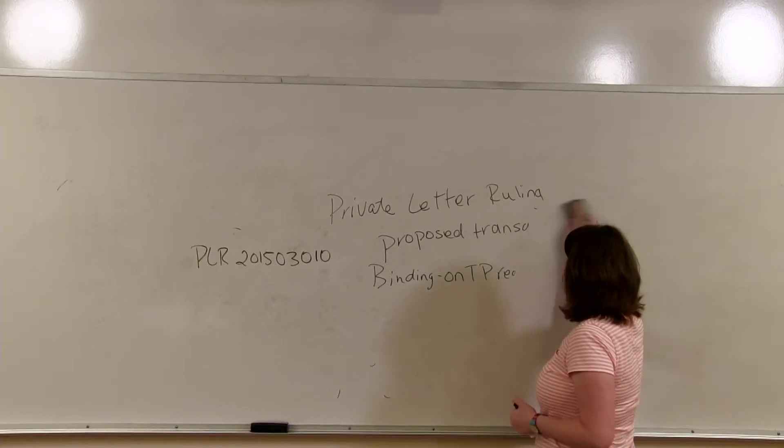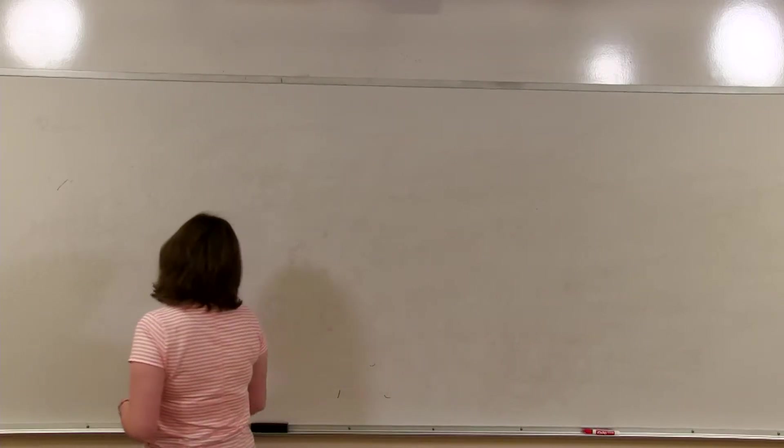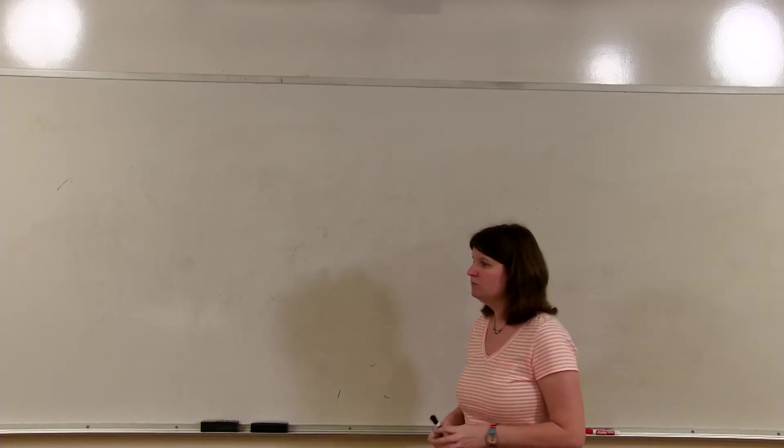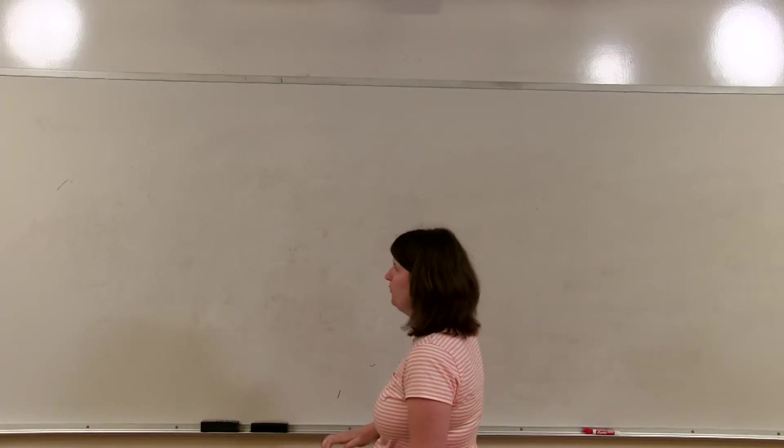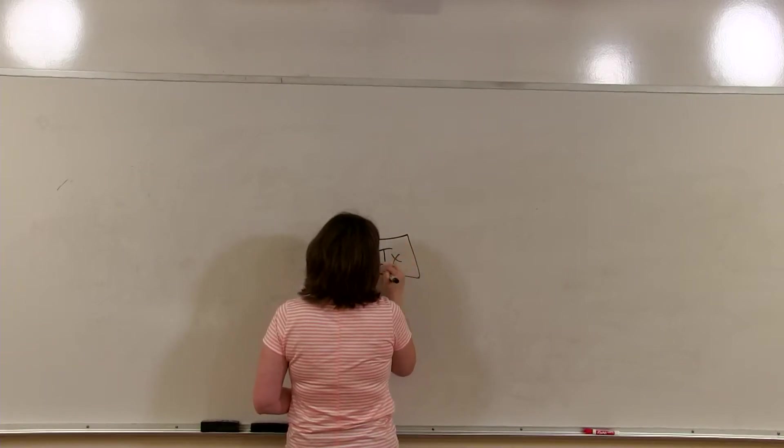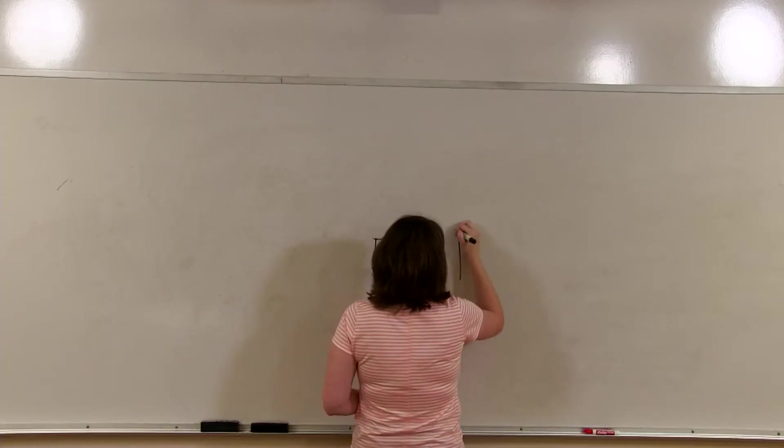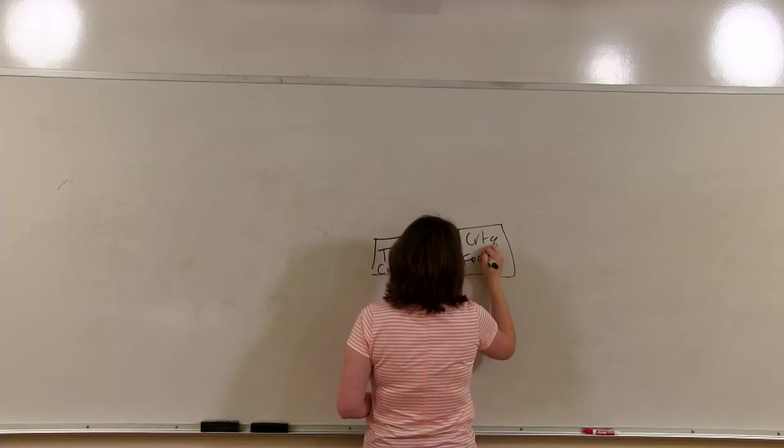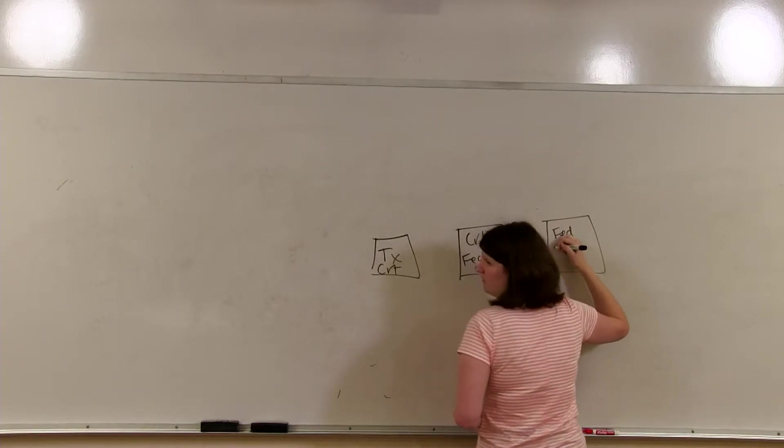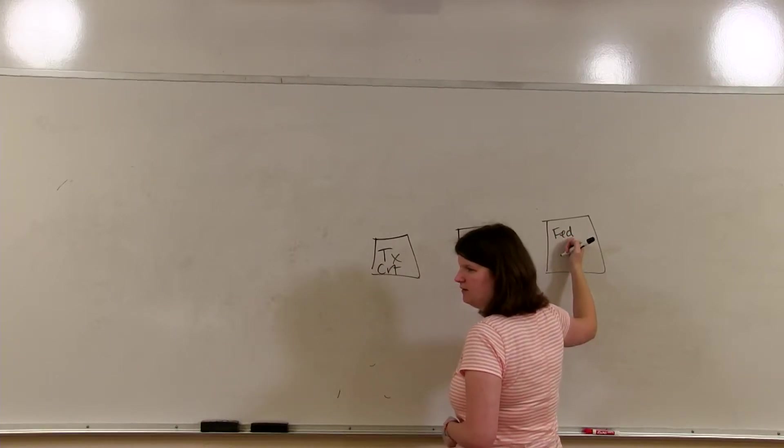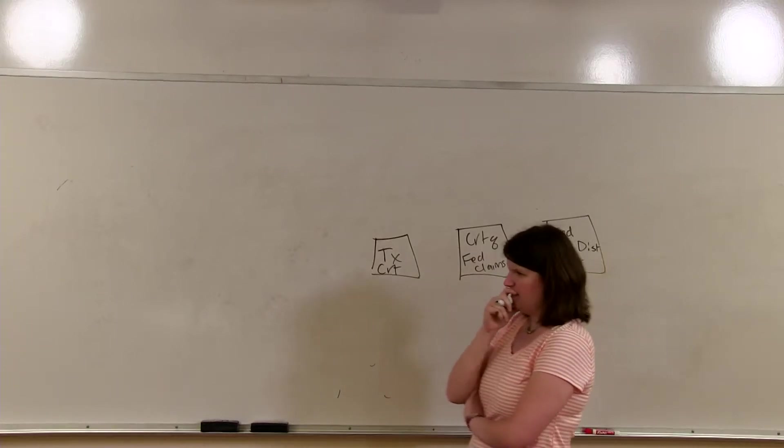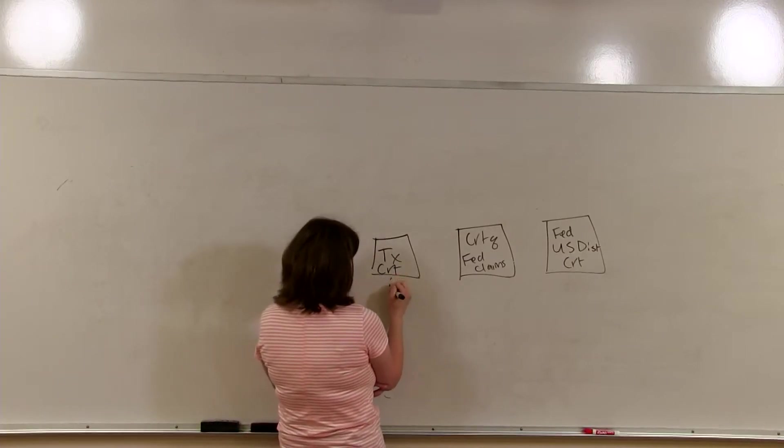Now we have talked about the administrative sources of tax law. We are going to talk about the last branch of government, which is judicial sources of tax law. So judicial sources of tax law are, of course, the courts. So there are three, really four different courts that a taxpayer can go through.